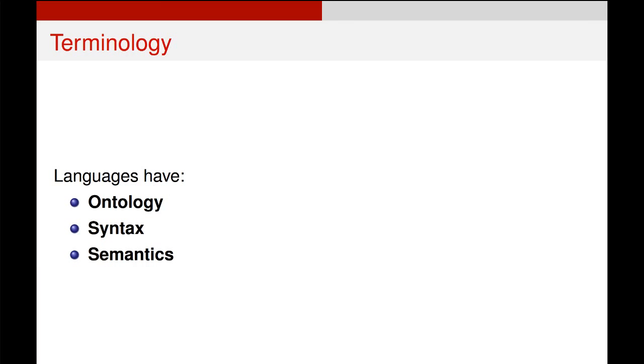So in order to introduce this, I want to introduce these three bits of terminology that are common between all languages. So all languages, whether they're programming languages or human-spoken languages, have these three components: ontology, syntax and semantics.